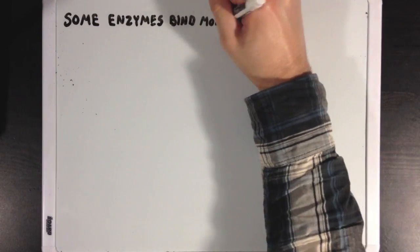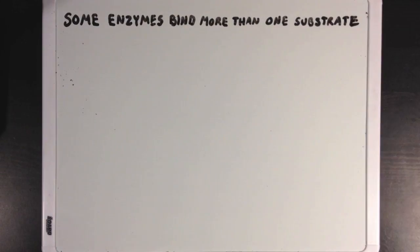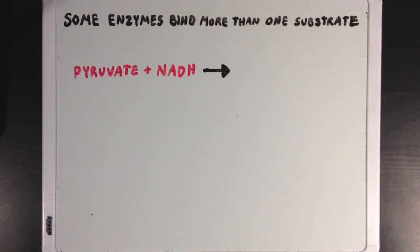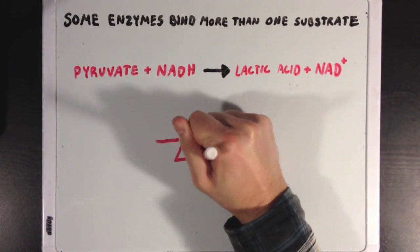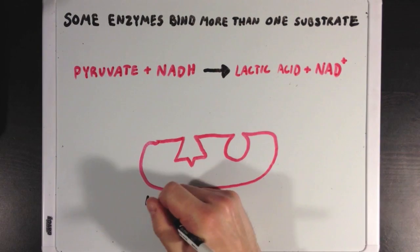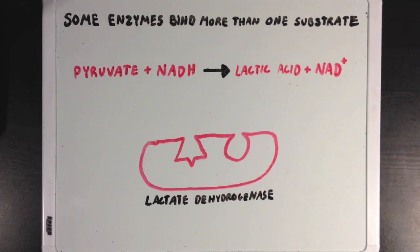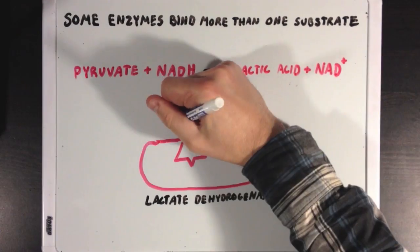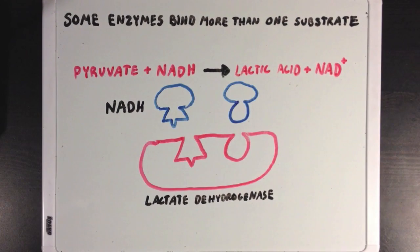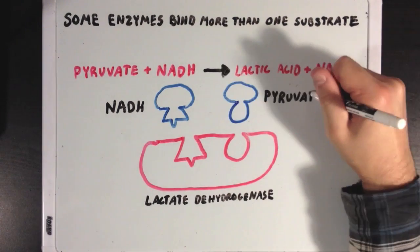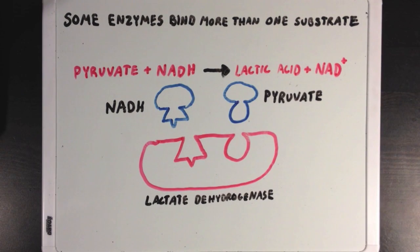Some enzymes will actually bind more than one substrate. Looking at lactic acid fermentation as a familiar example, we can see that the enzyme lactate dehydrogenase will have space to bind two different substrates: one space for NADH and the other for pyruvate. So enzymes don't necessarily bind just one substrate.